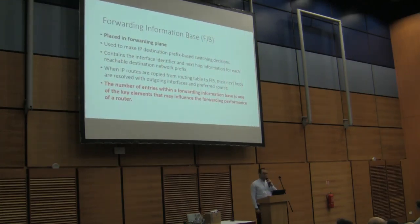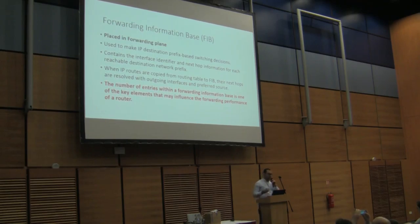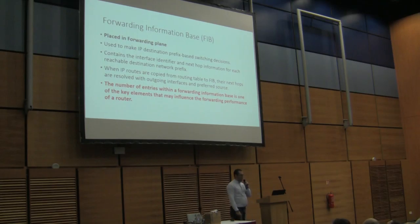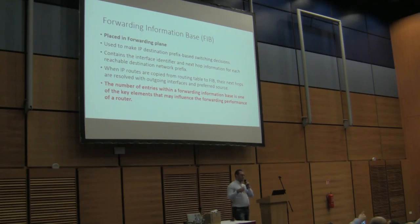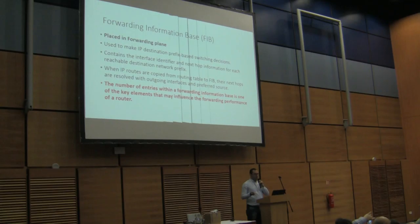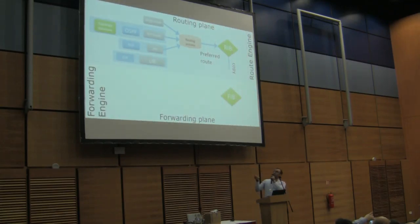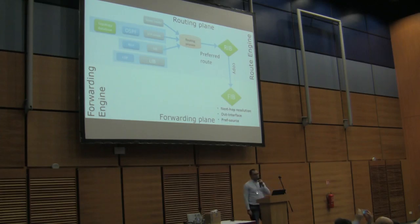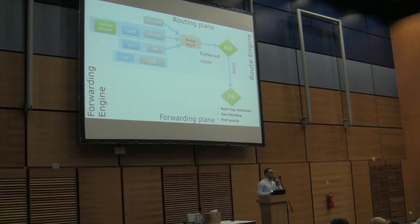The FIB — Forwarding Information Base — sits in the forwarding plane, the lower layer. It is used to make IP packet switching decisions, telling exactly how a packet will be switched out to the destination. It contains interface identification, next-hop resolution, and importantly a copy of the RIB is held inside the FIB for switching IP datagrams. The upper layer is the routing plane, and when a copy arrives, next-hop resolution determines which interface should be accessed and which preferred source to route through.